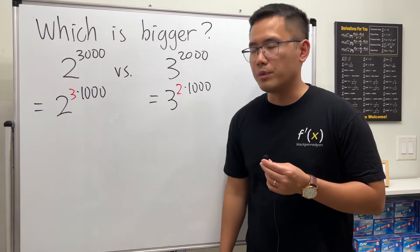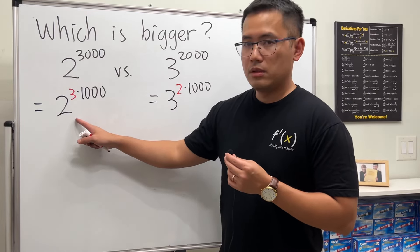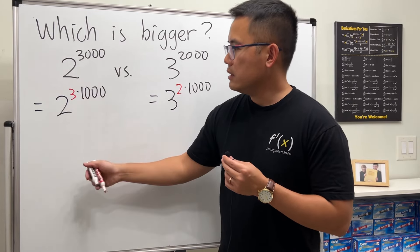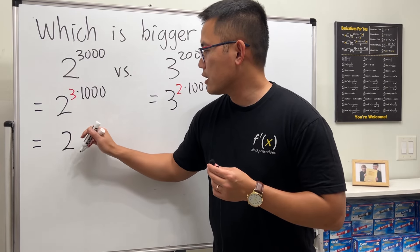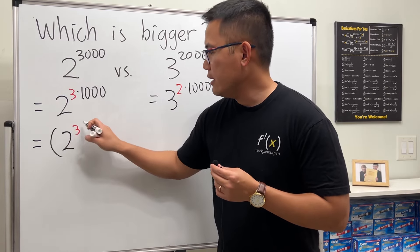So here's the deal: I'm going to keep the 1000, and we are just going to look at this as 2 to the 3rd power first, and then raised to the 1000th power.